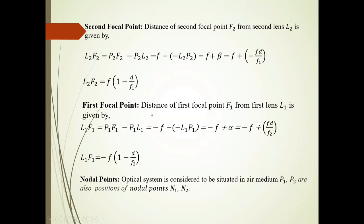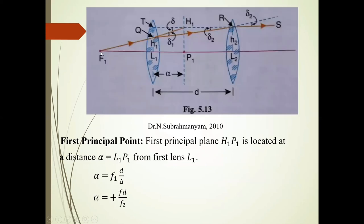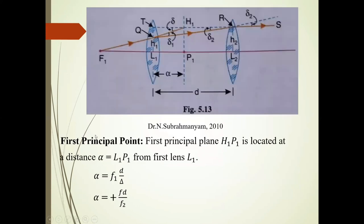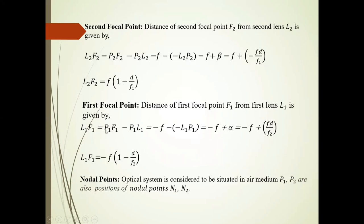So for first focal point, distance of this first focal point F1 from lens L1, this distance is. Now L1 F1, this L1 F1 distance is, see here P1 F1 minus P1 L1.